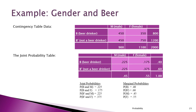Here's another example with gender and beer drinking. B is beer drinker, B prime is not a beer drinker, M and F for male and female. With a sample of 2,000, we compute a joint probability table. The probability of being a male beer drinker is 0.225; female beer drinker is 0.175; male non-beer-drinker is 0.225; female non-beer-drinker is 0.375. The probability of being a beer drinker in this town is 40%. The probability of being male is 0.45.